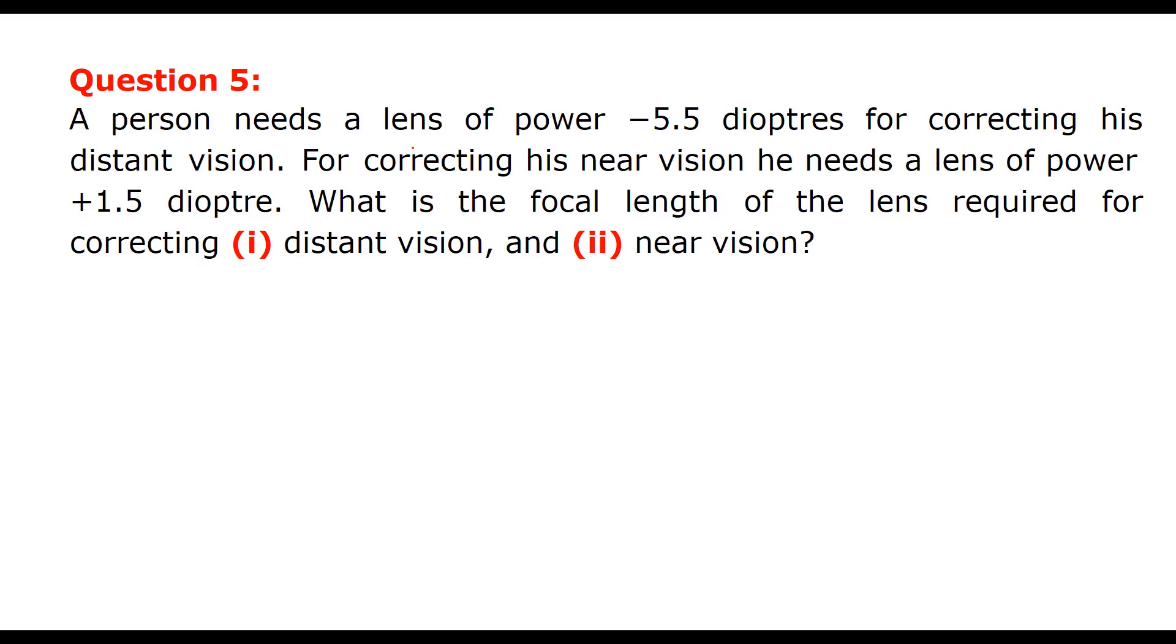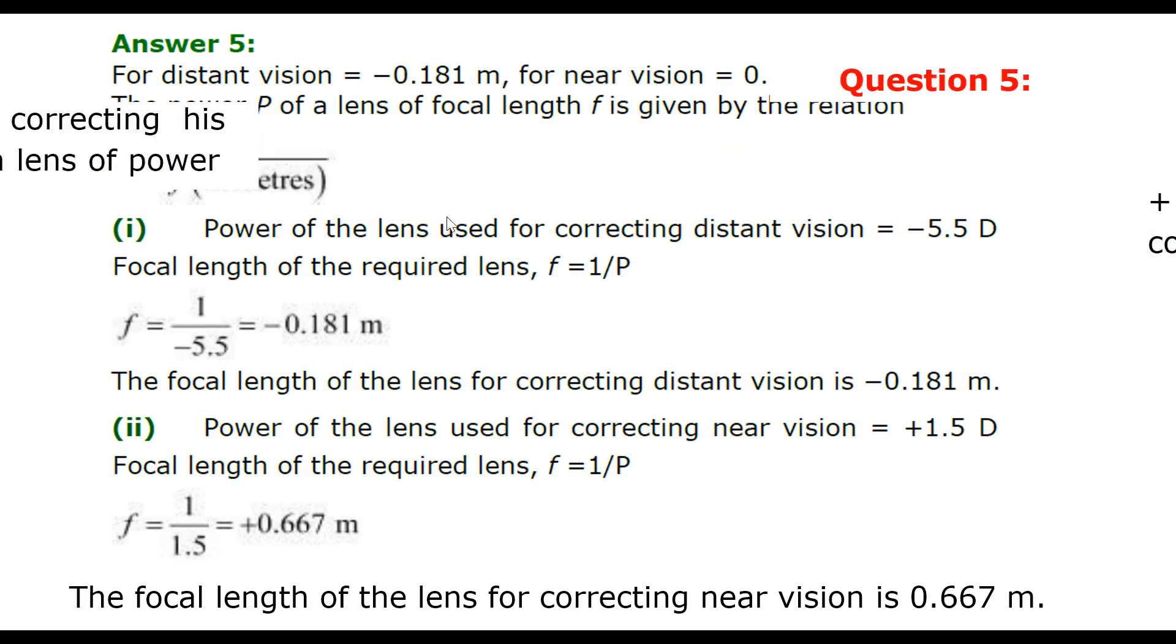A person needs a lens of power minus 5.5 D for correcting his distance vision. For correcting his near vision, he needs a lens of power plus 1.5 diopters. What is the focal length of the lens required for correcting distance vision and near vision? We have a simple relation for that.